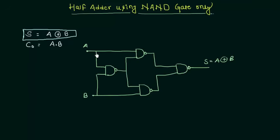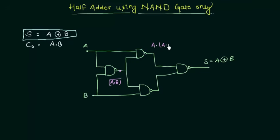A goes into this gate, and A also goes into this gate, and B goes into this gate. So at this point, what you are having is A AND B and then its complement — because this is a NAND gate, you take the AND operation and then its complement. This A AND B complement then goes as one of the inputs to the next gate, and A is the other input, giving us A AND B complement, whole complement.